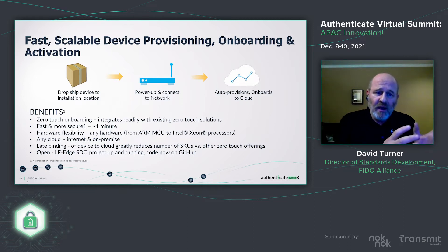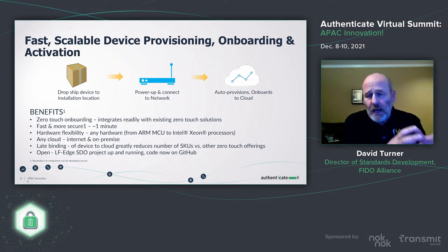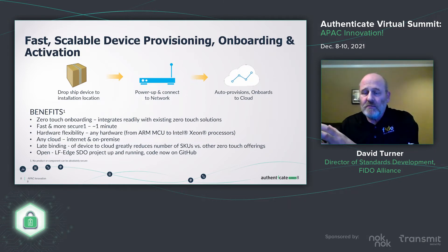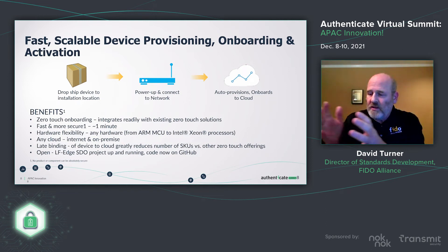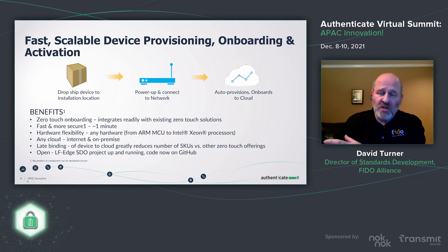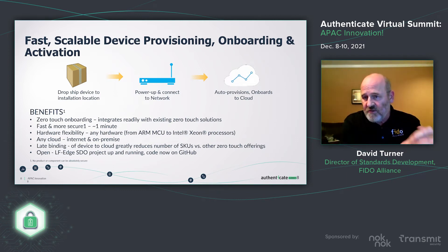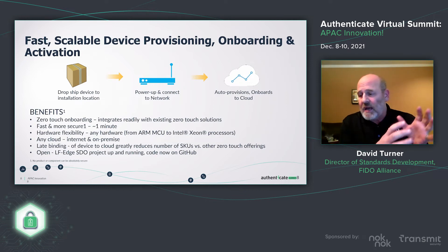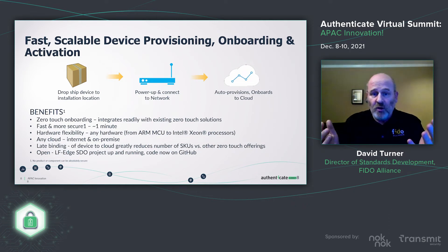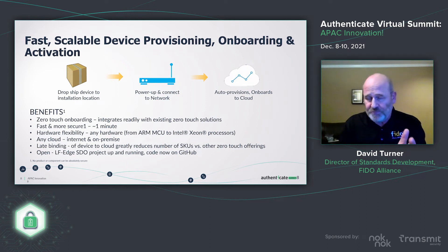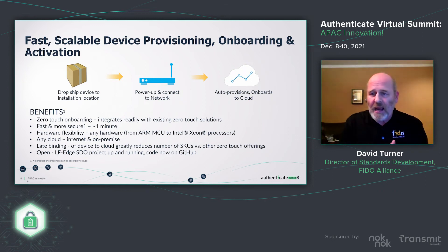Part of the drop-ship model is ensuring manufacturers don't have to know in advance what system the device will be installed in. Today, a manufacturer often has to know in advance whether it's going to be an Amazon, Google, or Honeywell system, and provision the device accordingly. That requires multiple SKUs for each system, the supply chain has to stock them all, and the end customer has to know which SKU to buy. And if they switch systems, they may have to buy a new device entirely.